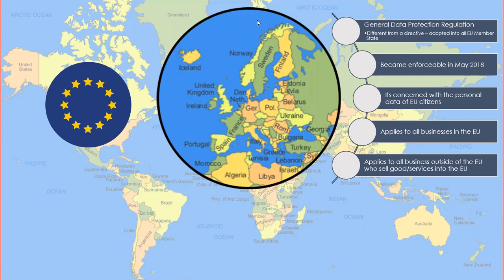GDPR became enforceable in May 2018 — it had been law for a couple of years but really became enforceable after that. It is concerned with the personal data of EU citizens, and it applies to all businesses within the EU. Businesses outside the EU that want to trade on scale with EU businesses also have to abide by it. We won't do scare tactics around fines today — we're going to focus on facts and practical steps you can take.